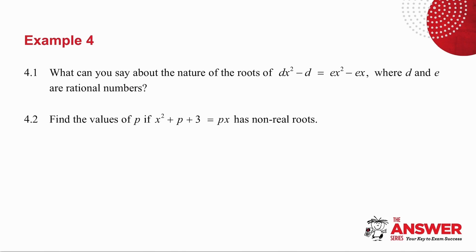Example number 4. So in 4.1, I say, what can you say about the nature of the roots of dk² - d = cx² - cx, where d and e are rational numbers? Now that's not important to your calculation. The only thing that it is important with is when you get delta, it means that d and e have to be rational numbers.